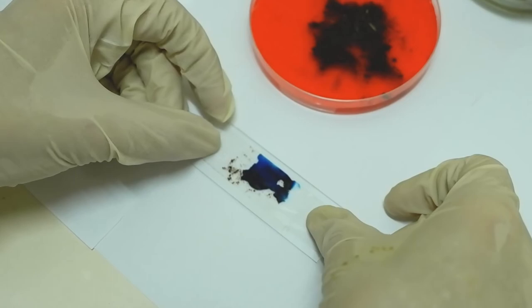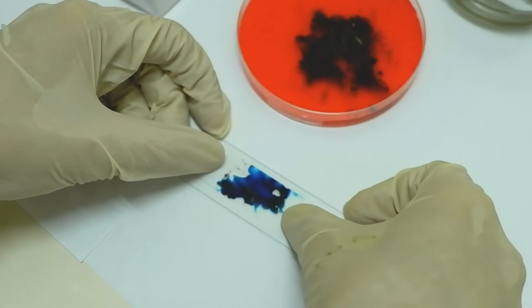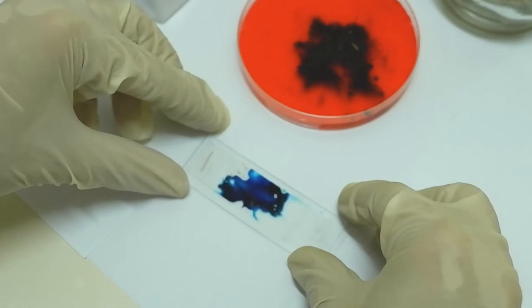Now place the tape sticky side down on the sterile slide over the lacto phenol cotton blue stain. While stretching the tape, press both ends of the tape to attach it firmly to the slide.